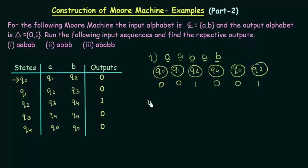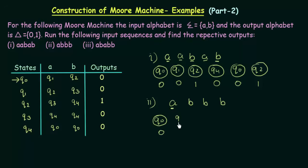Now let's check the next one. The second input sequence is ABBB. Again we start with our initial state Q0, and Q0 gives the output 0 even before it gets any input. The first input is A. Q0 on getting A goes to Q1, and Q1 produces the output 0. The next input is B and we are in Q1. Q1 on getting B goes to Q3, and Q3 produces the output 0.